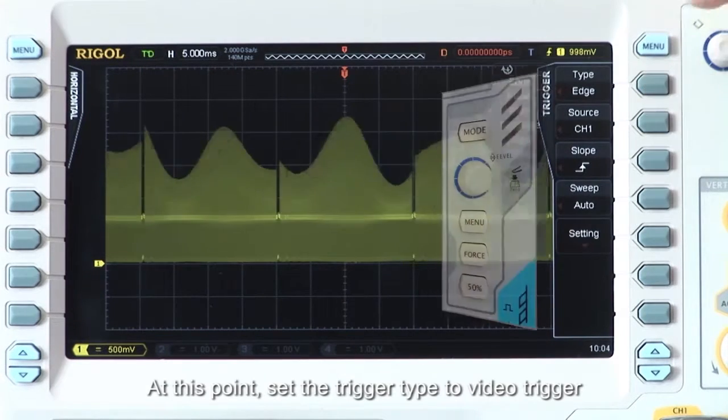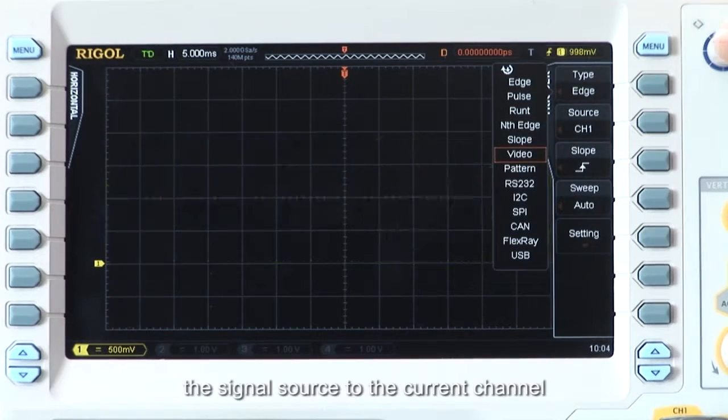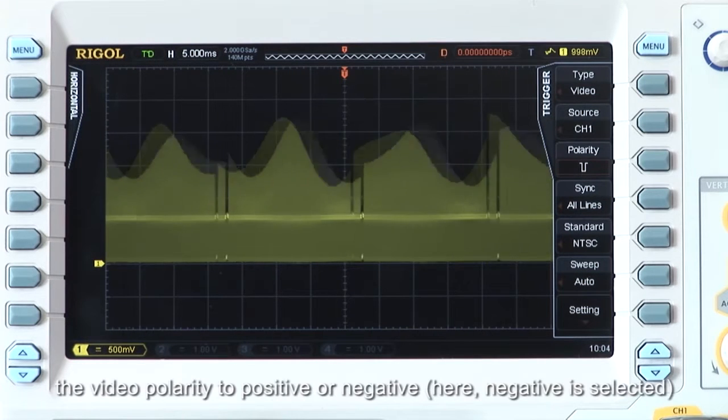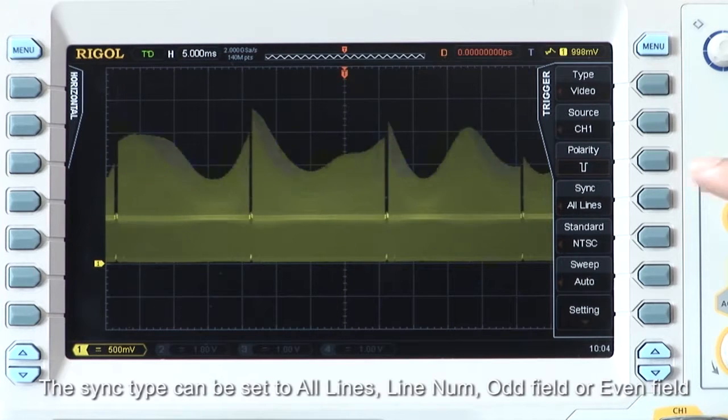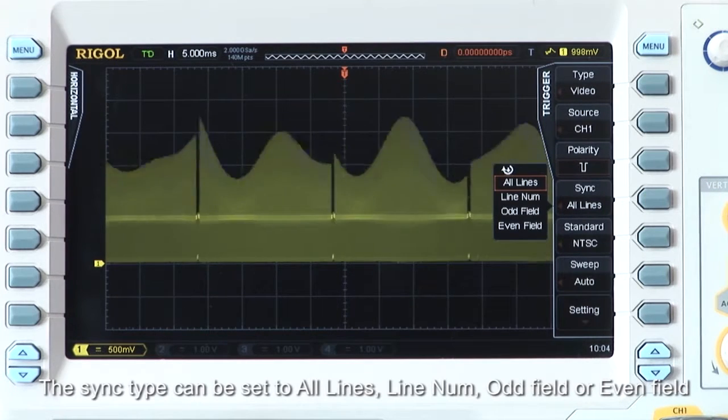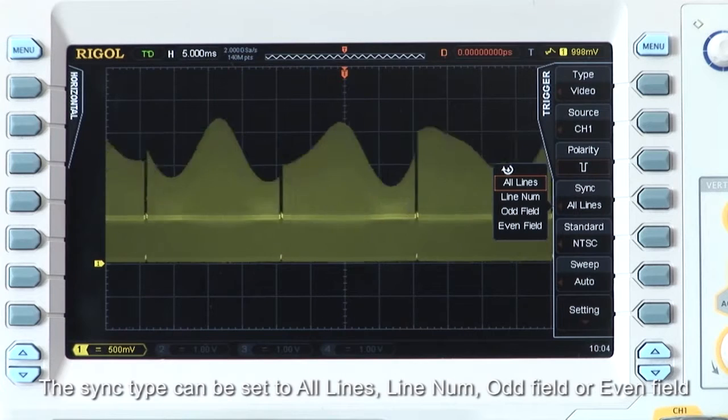At this point, set the trigger type to video trigger, the signal source to the current channel, the video polarity to positive or negative, here negative is selected, and then the sync type can be set to all lines, line numb, odd field, or even field.